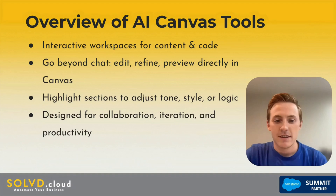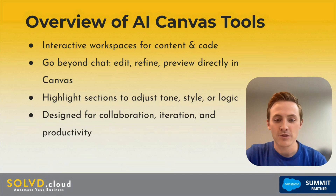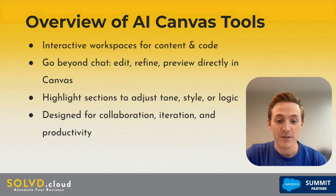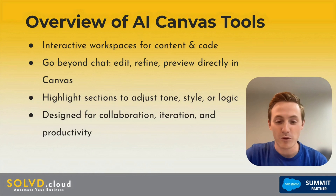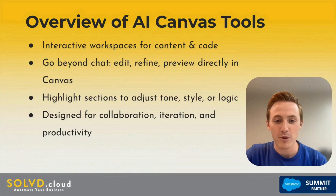ChatGPT and Gemini both offer a tool called Canvas, which is going to help you automate your business even further. To answer the question of what these AI tools are, it really goes beyond our typical interactions with AI — it's different than just getting into ChatGPT and Gemini and typing in a prompt and going back and forth with the AI.